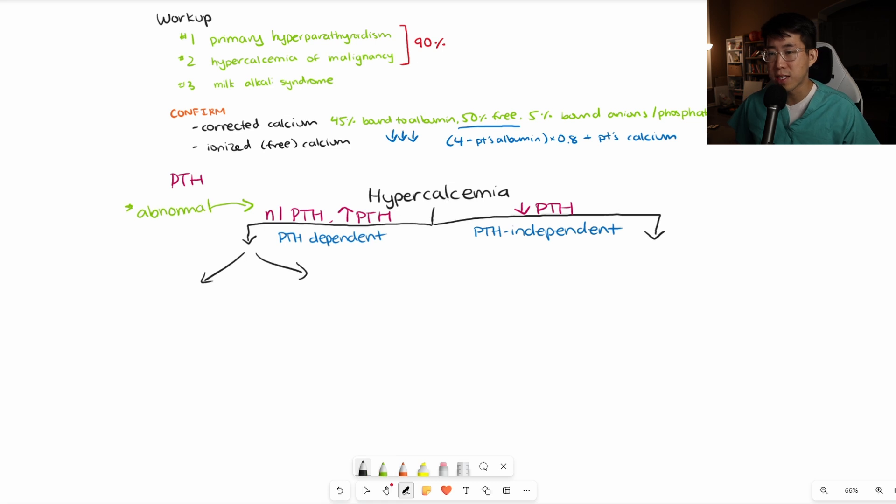On this PTH-dependent side, I'm going to split it into a very elevated PTH and then a normal to minimally elevated PTH. If it's a very elevated PTH, you almost certainly can make the diagnosis of primary hyperparathyroidism. Less common diagnoses include tertiary hyperparathyroidism in patients with long-standing ESRD and parathyroid carcinoma.